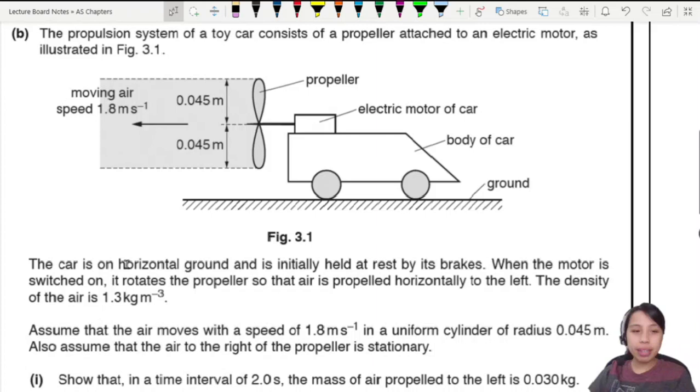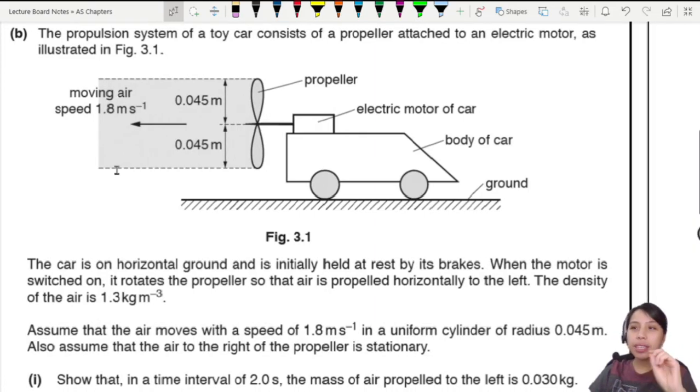Okay, here's the toy car, the main system of today. You have a toy car with a propeller turning. And the car's on the ground, at first at rest. Initially held at rest. When the motor is switched on, the propeller starts to turn. And it blows the air to the left. See this grey column of air? The density of the air is given to us. Why would they give us density? Interesting.